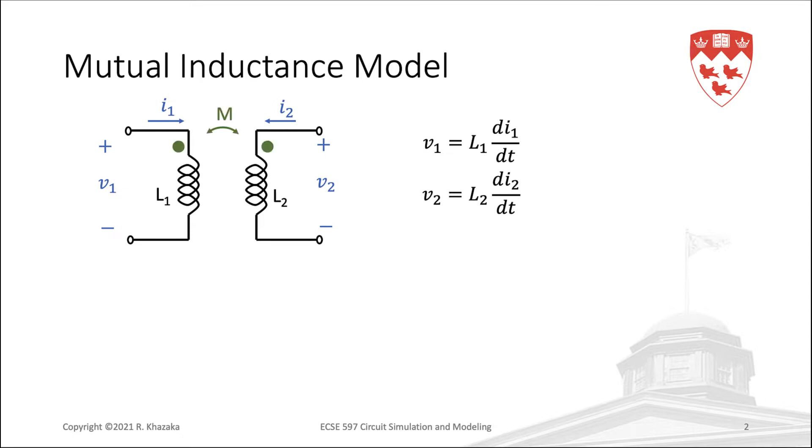Now let us consider the case where there is coupling between L1 and L2, resulting in a mutual inductance M. In this case, we need to add an additional term, M dI2 by dt to the voltage V1. In other words, there is an induced voltage at the terminals of L1 due to the change in the current I2 in L2. This, of course, is due to the coupling between the two inductors.